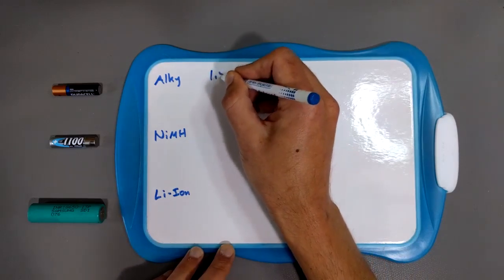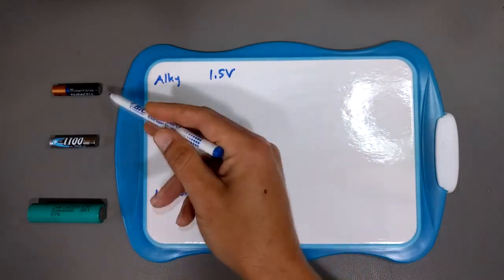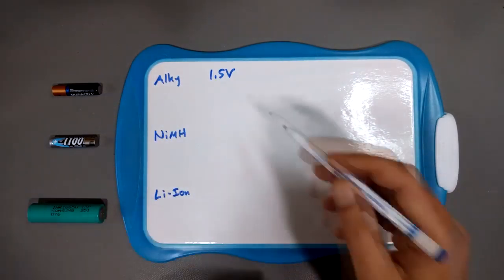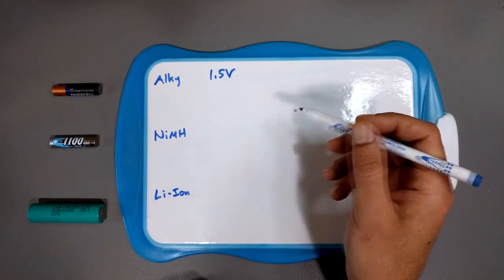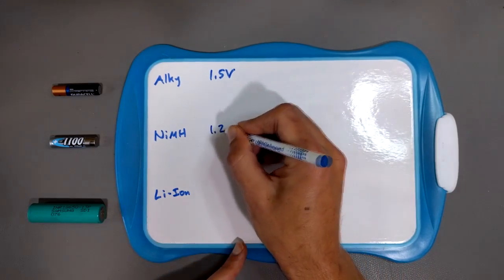Alkaline batteries are usually 1.5 volts. There are, there's like a nine volts, six volt, but your typical size like this, triple A, double A, C and D, they're all 1.5 volts. Nickel metal hydride, on the other hand, are 1.2 volts.